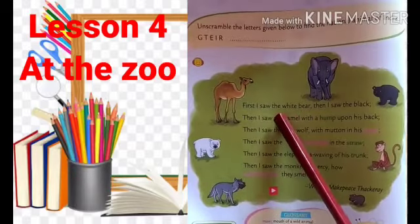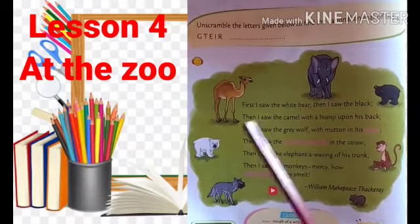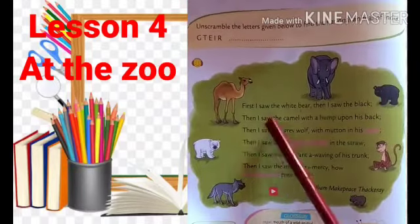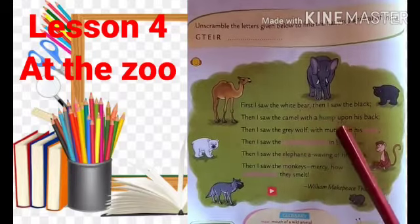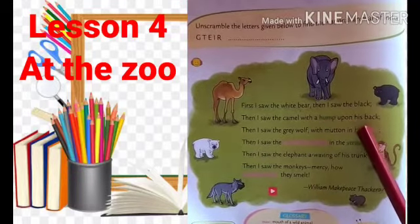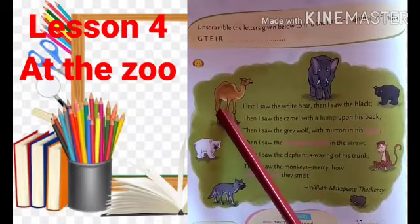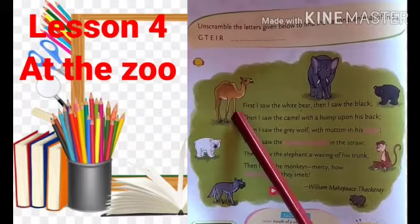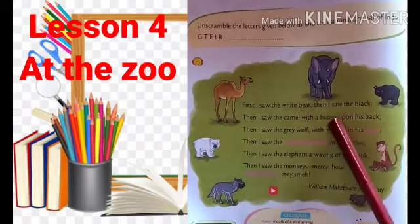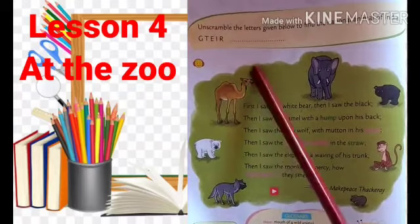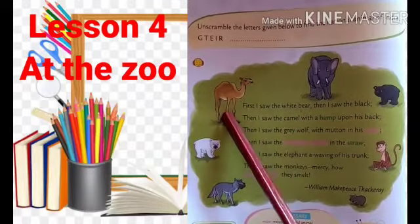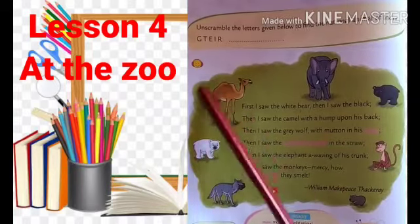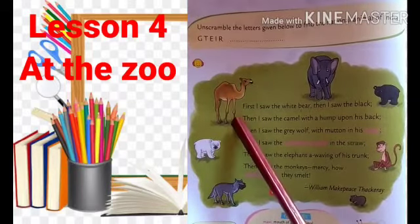First he saw the white bear and then he saw the black bear. Then I saw the camel with a hump upon his back. What is on his back? What is there on the back of a camel? Hump. He saw a camel. What is there on the camel? Hump. Where is the hump? On the back of the camel.